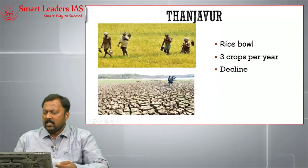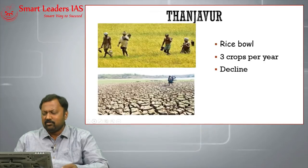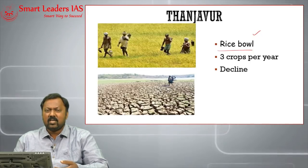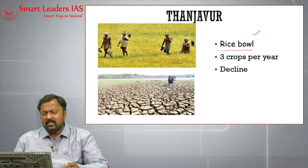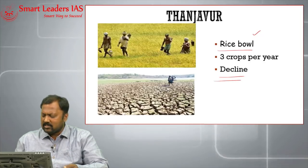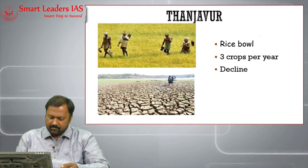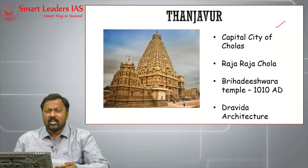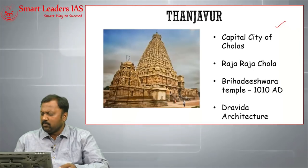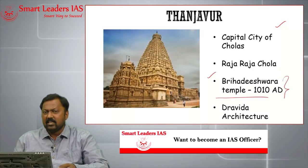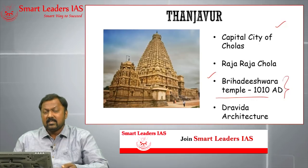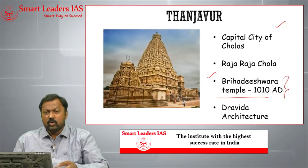Tanjavur is a very important, very fertile place — the deltaic region of the Cauvery River and considered the rice bowl of Tamil Nadu. Historically it has been a great agricultural centre, but recently there has been a decline in agriculture due to water scarcity. Tanjavur was the Chola capital during ancient India, where the Imperial Cholas ruled and made it their capital.